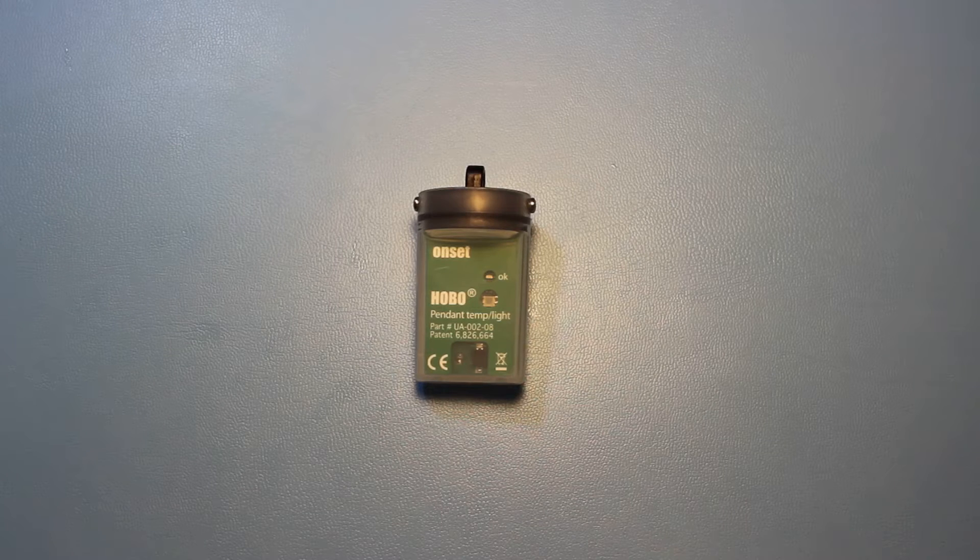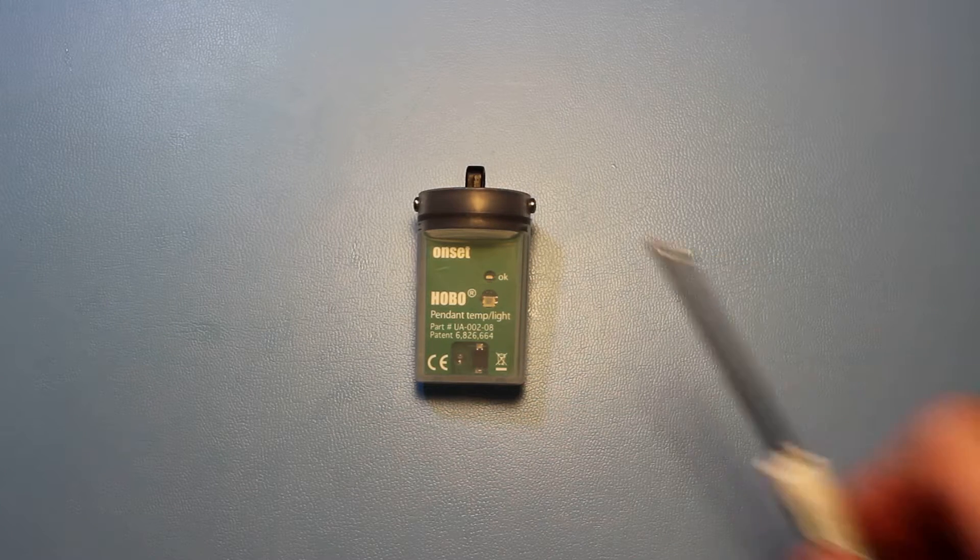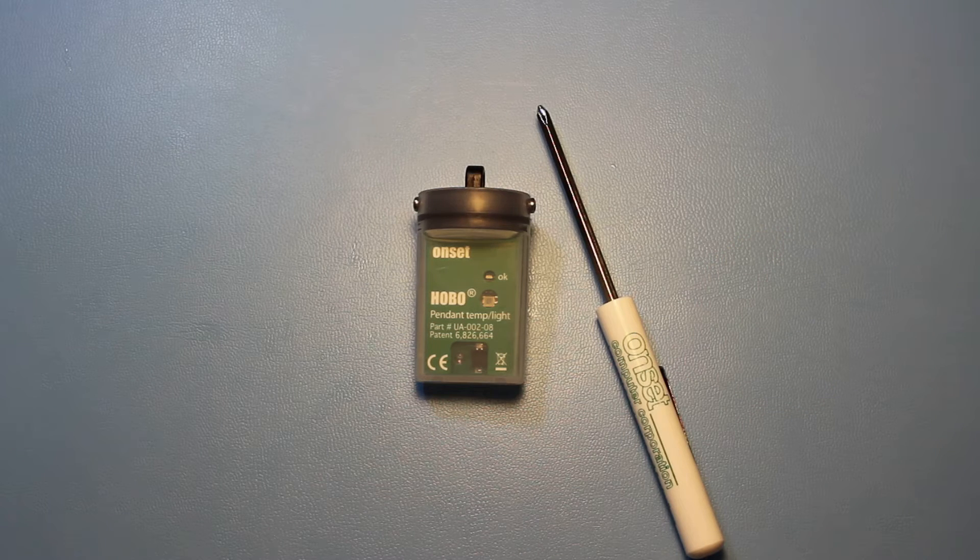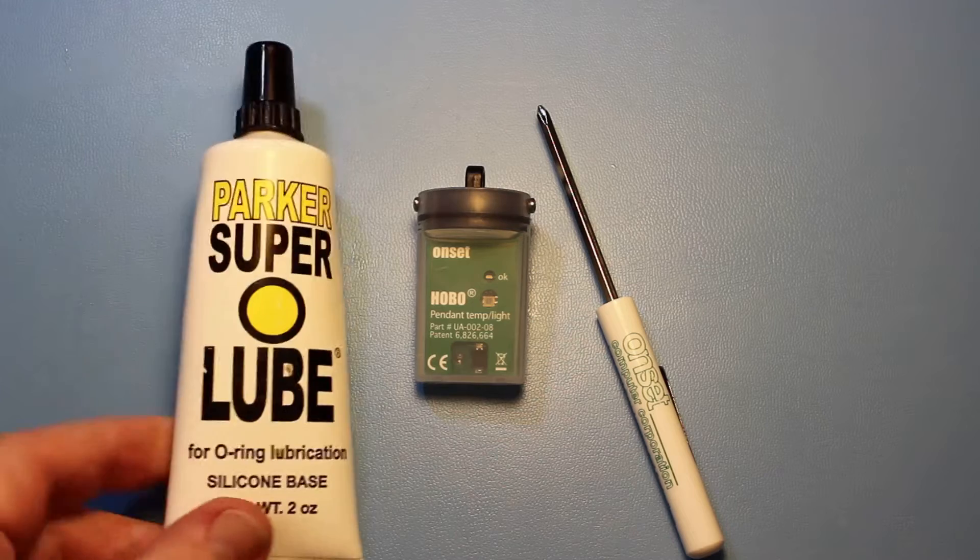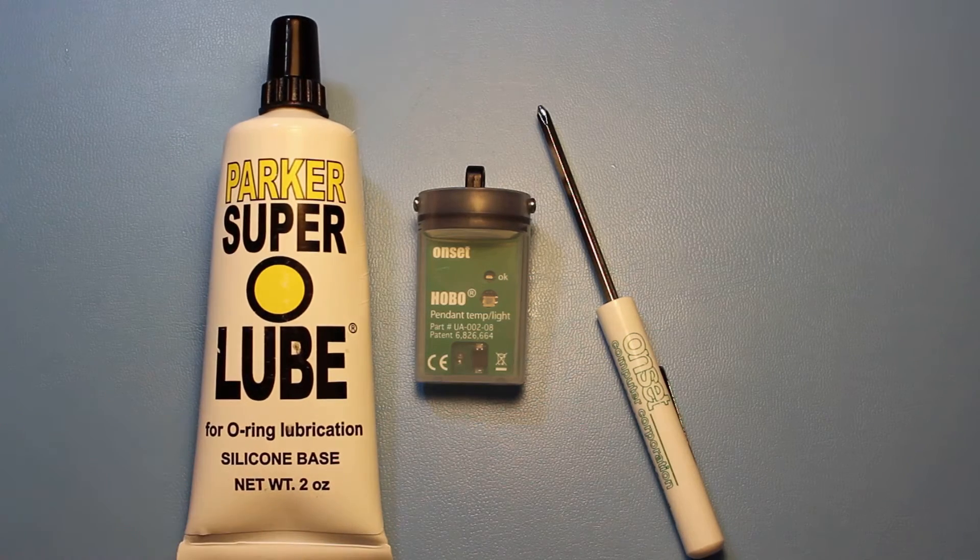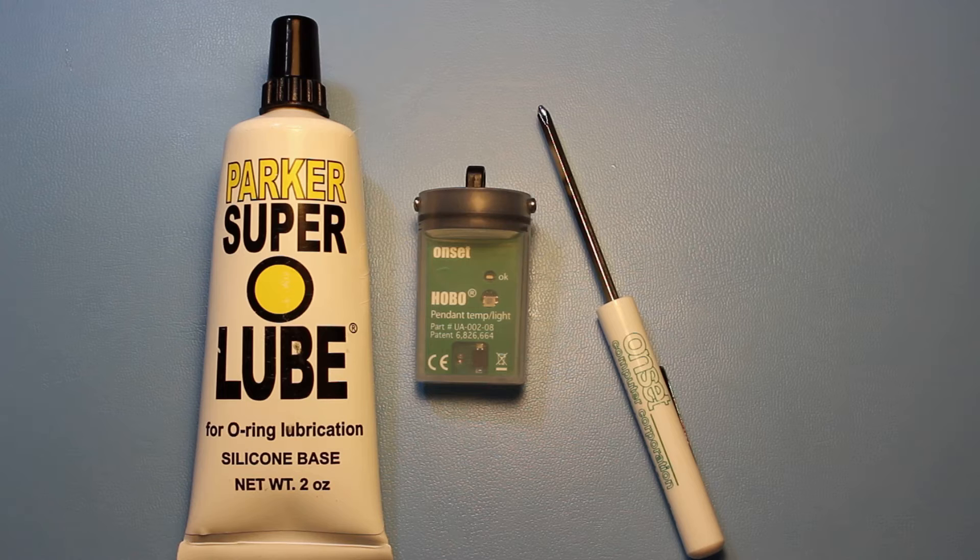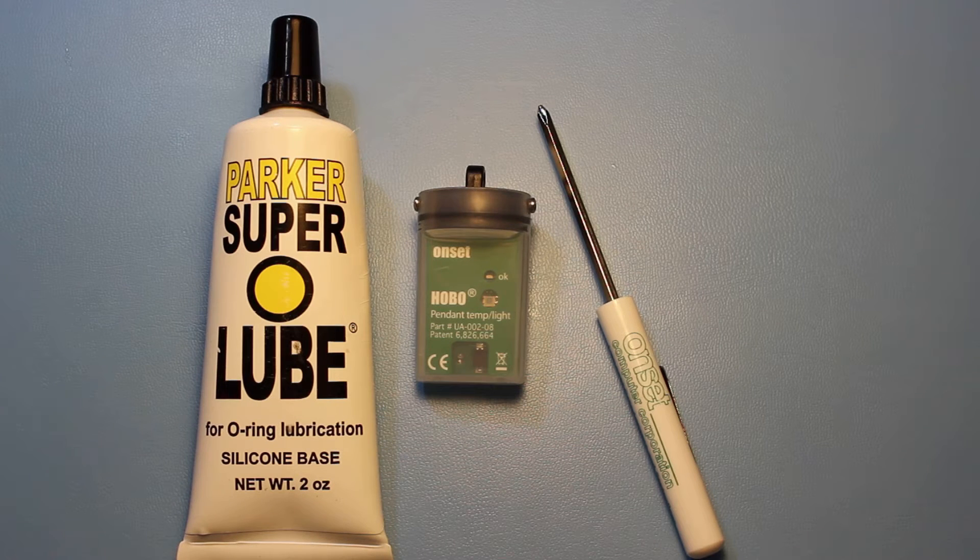To get started, you will need a few tools. You will need a small Phillips screwdriver. You will also need some silicone-based O-ring lubricant. Here we're using Parker Super O-Lube. Again, it has to be silicone-based, not petroleum-based or any other type.